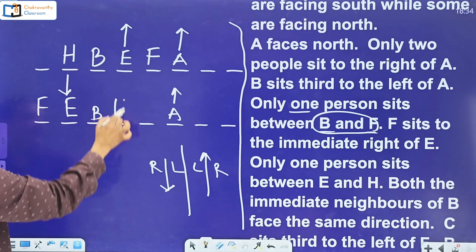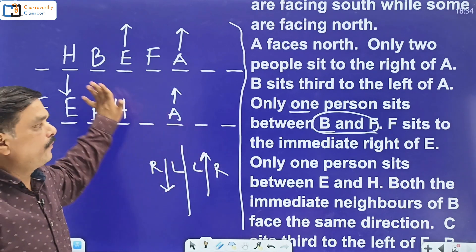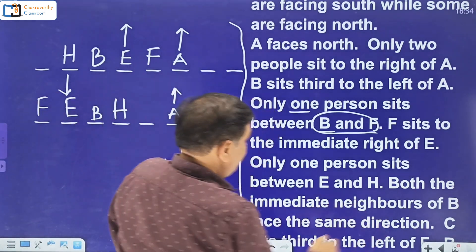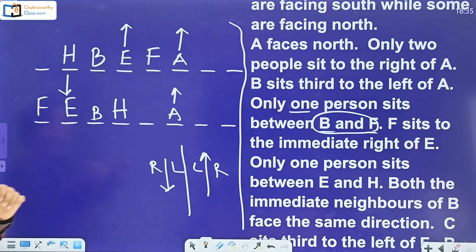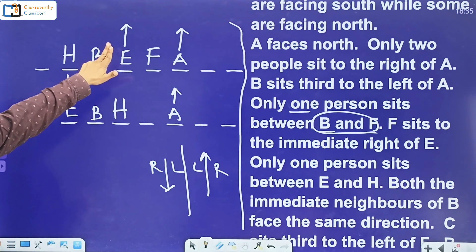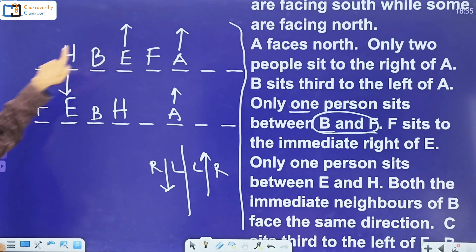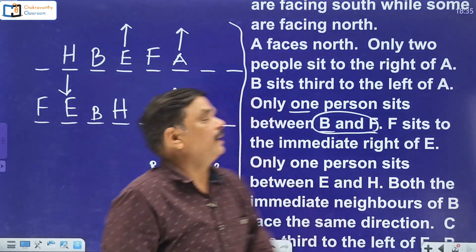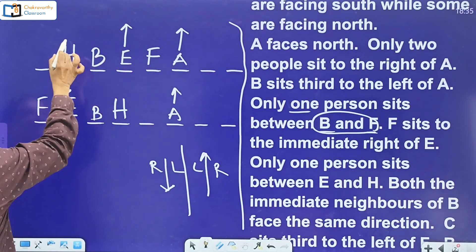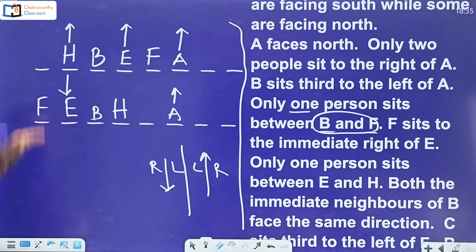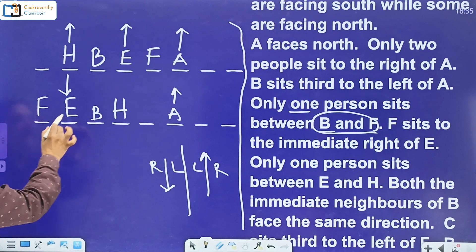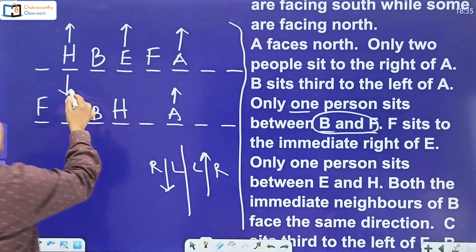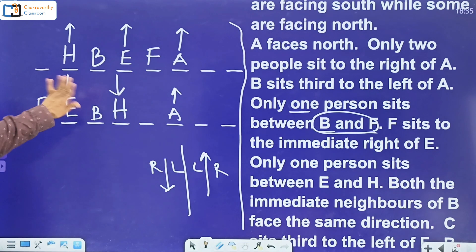So far both arrangements are going in parallel — neither has been eliminated yet. Next clue: both immediate neighbors of B face the same direction. This means if one neighbor is facing north, the other must also face north. In this arrangement, B's neighbors are E and H. E is facing south, so H must also face south. Both must be facing the same direction.